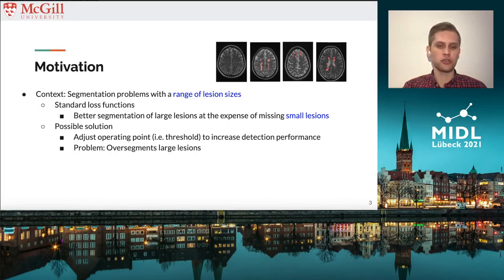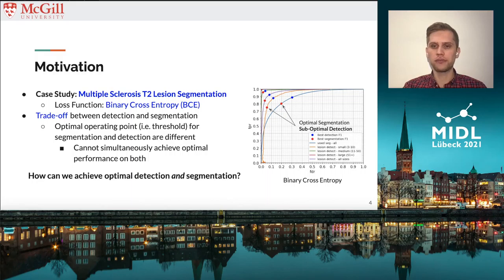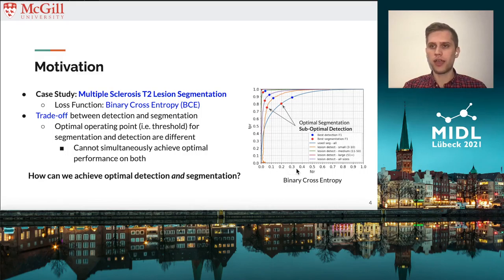Here we have a case study which involves segmenting T2 lesions in the context of multiple sclerosis. To do this, we train a U-Net using the binary cross-entropy loss function. If I can draw your attention to the figure on the right: on the y-axis we have the true positive rate, or TPR, and on the x-axis we have the false detection rate, or FDR. The blue curve corresponds to voxel-level segmentation performance, and the purple curve corresponds to lesion-level detection performance.